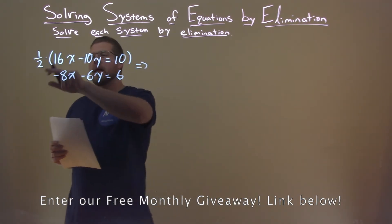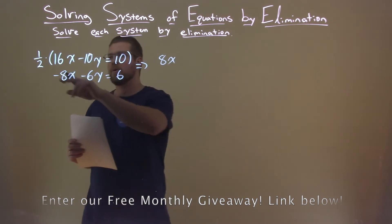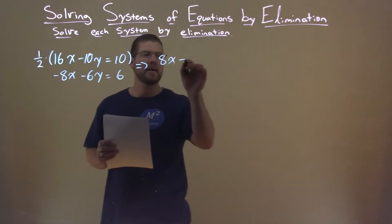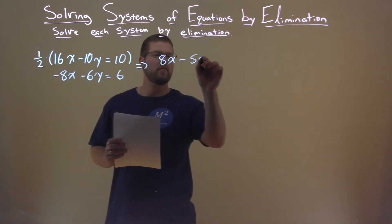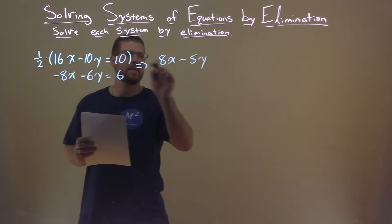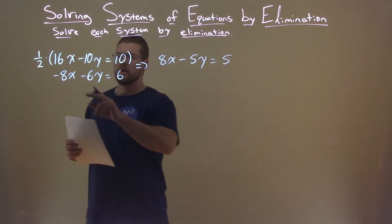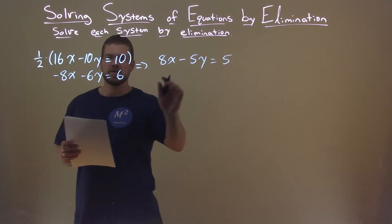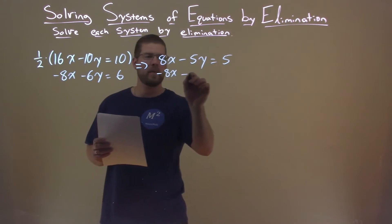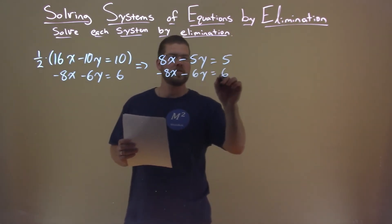1/2 times 16x is 8x. 1/2 times negative 10y is negative 5y. 1/2 times 10 is 5. Bring the second equation over: negative 8x minus 6y equals 6.